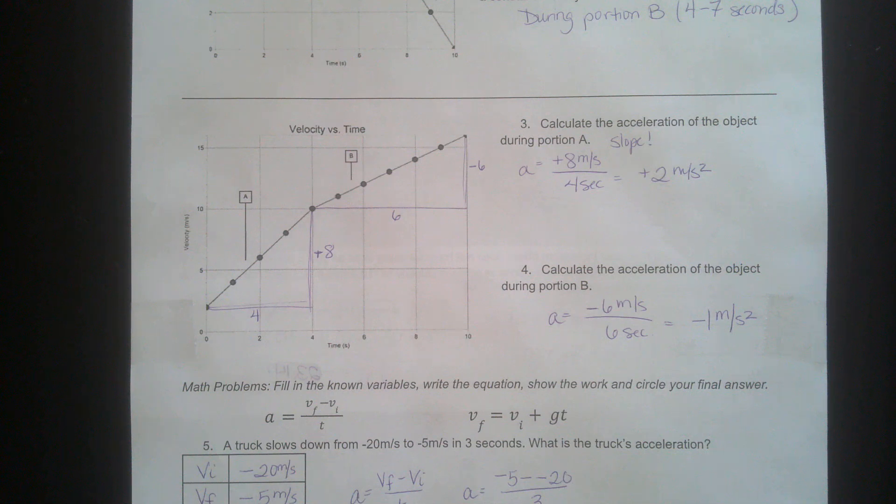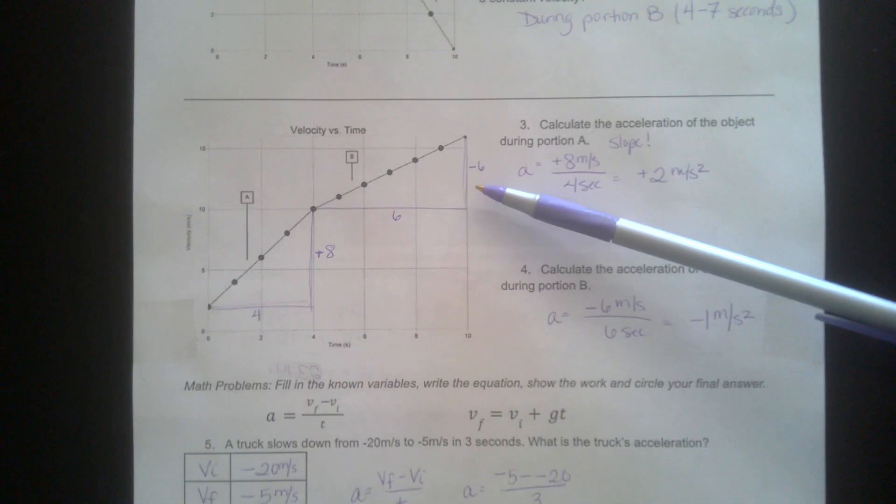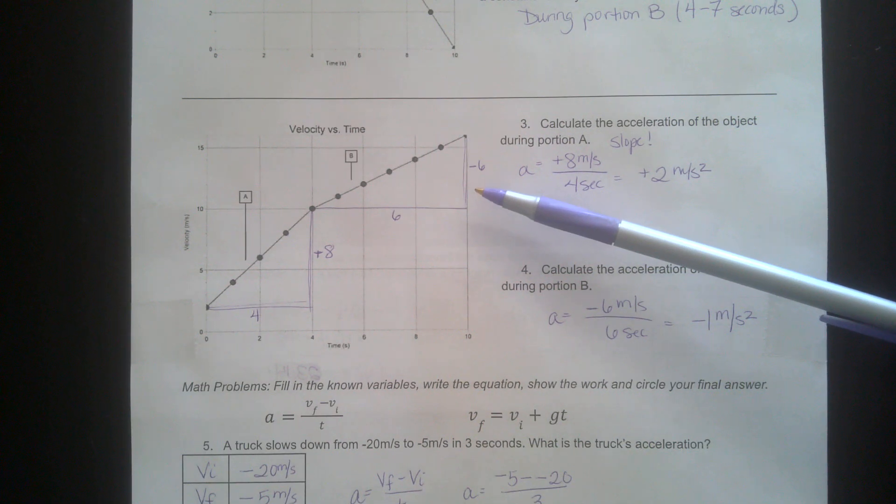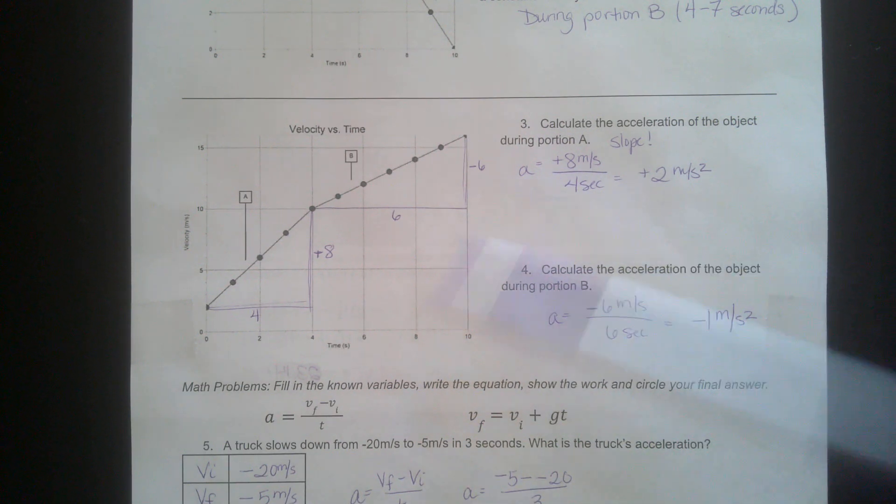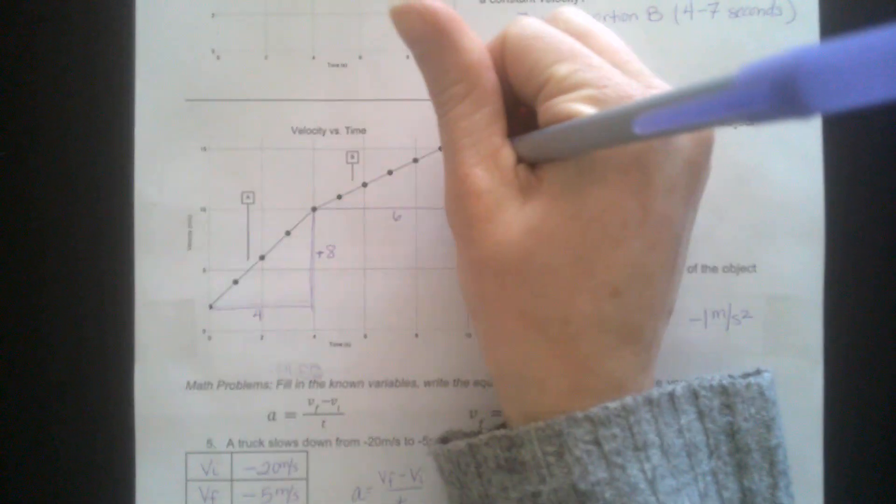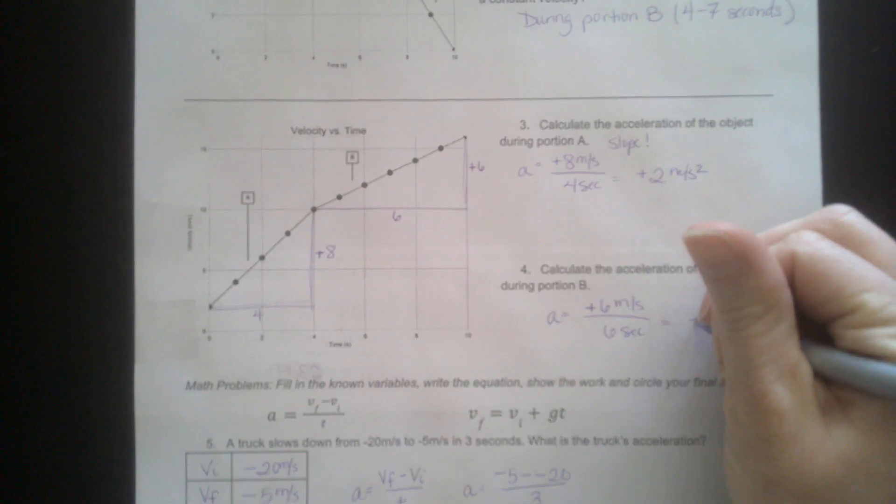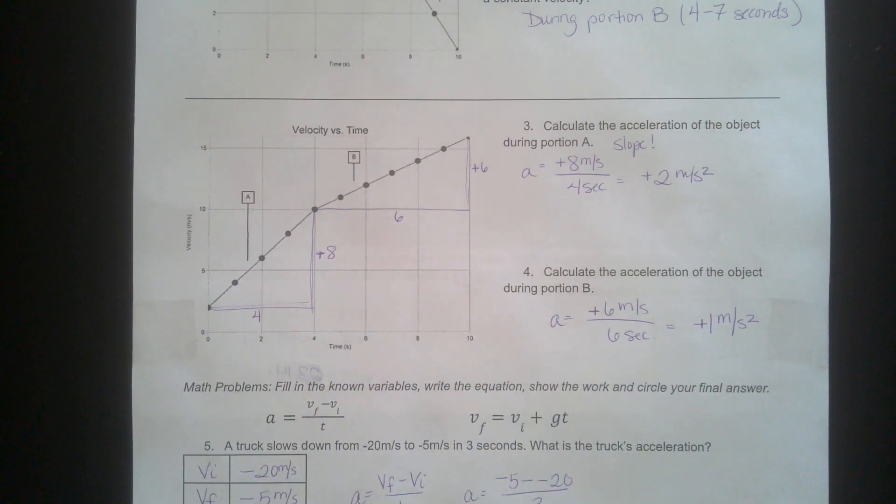For portion B, you're looking at a change of 6. I don't know why I put a negative there. That's a positive change of 6 over 6 seconds. Let me fix this. All of that should be positive. That's why you double check your work. Sometimes you catch an error.